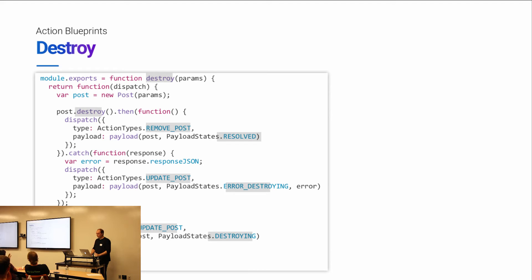Another question: what happens if you have race conditions — you make two calls, the server responds back, then you get the next call to update a post and they come back at different times? We're going to touch on that a little bit in optimistic updates, and we can go into more detail after the presentation. It's a great question and can be very challenging to solve, but it's very similar to optimistic updates in terms of that concern.